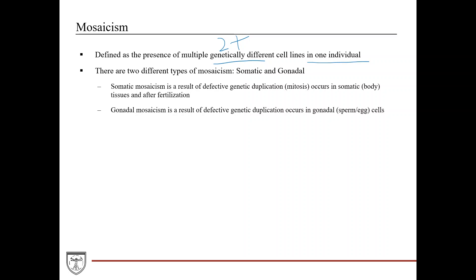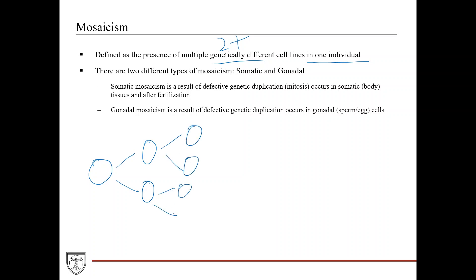This is actually more common than you think. The way this happens is it can occur during embryonic development or over the course of a person's lifetime. Let's say during embryonic development you have a cell, and it's dividing into two cells, and then these cells divide again — this is how the embryo is formed.